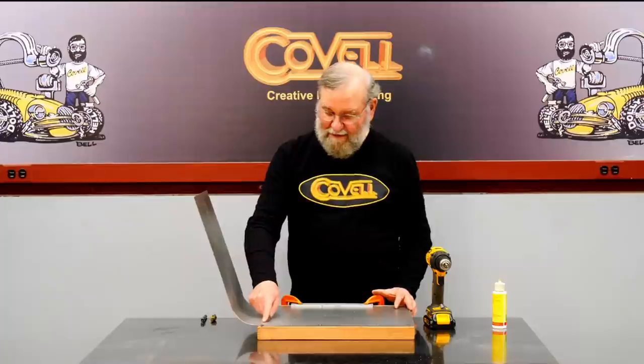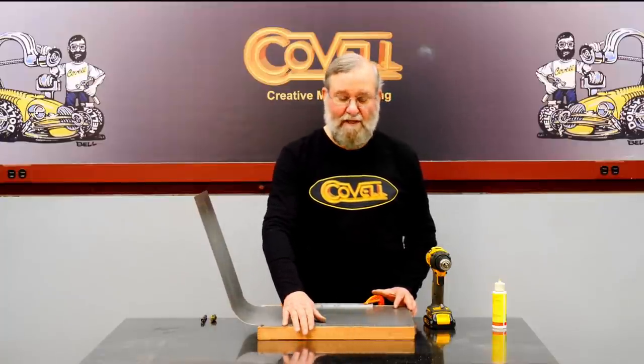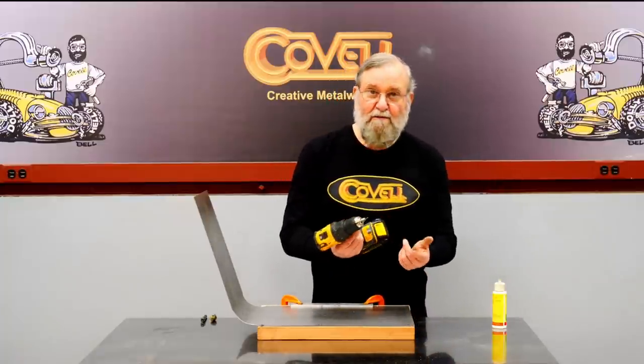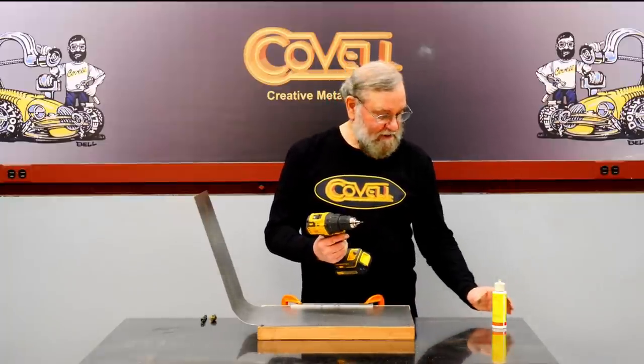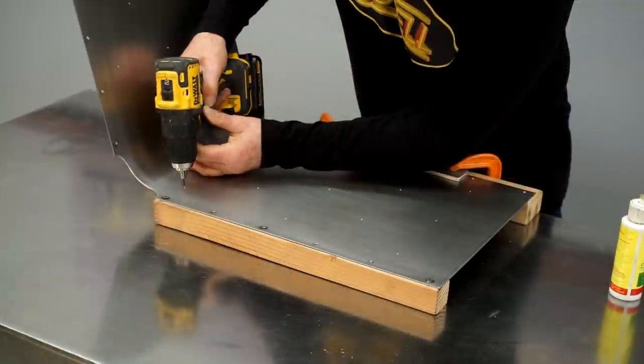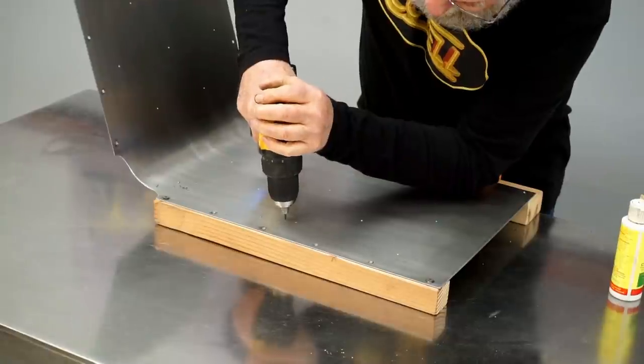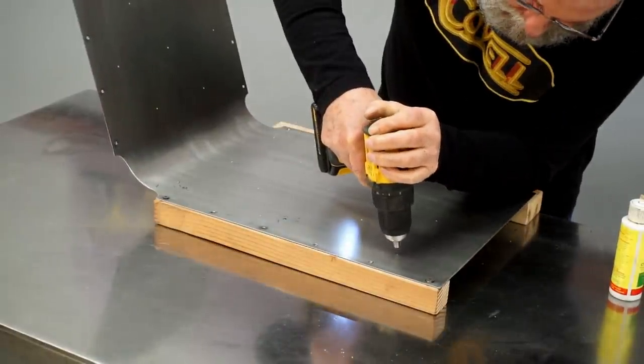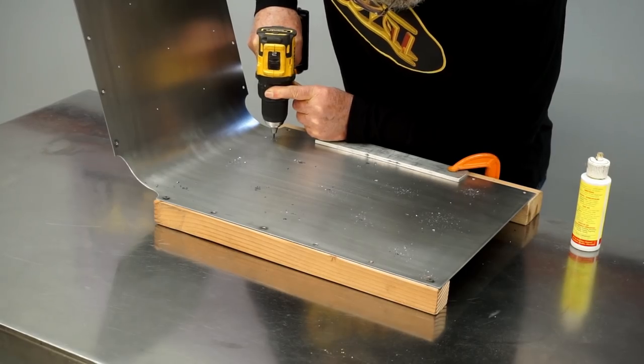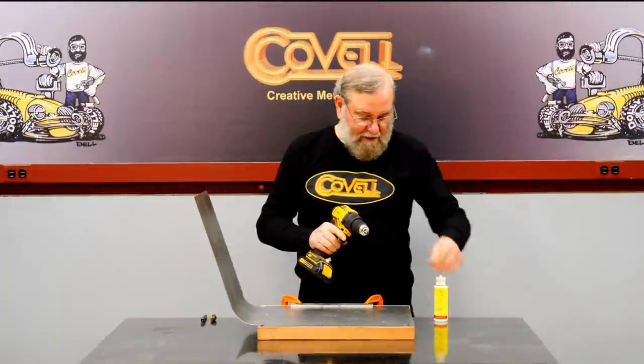I'm going to drill a pilot hole in each of these hole locations, and you can see I've elevated my workpiece with wooden blocks so I can get it up off the table, so when I break through with the drill it won't drill into my table. So I'm using a pilot drill here.